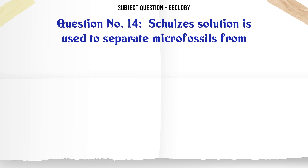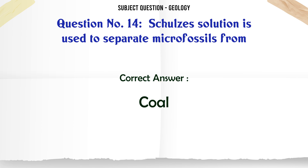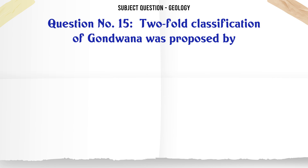Schultz's solution is used to separate micro-fossils from: A. Shale. B. Chert. C. Coal. D. None of these. The correct answer is Coal.